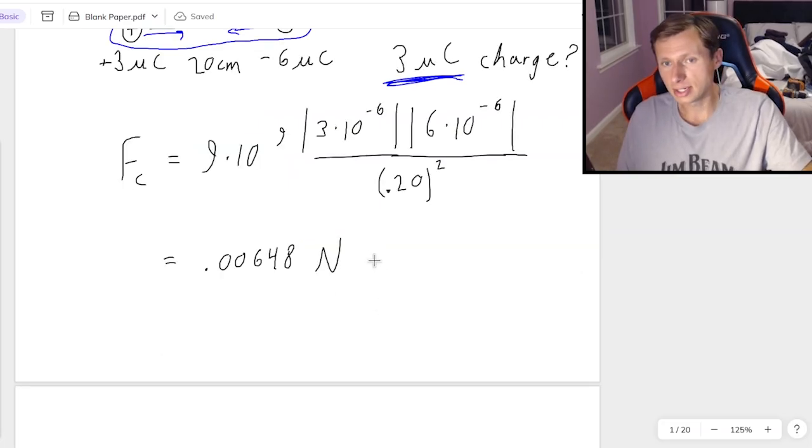The way I can represent that, I can do it one of two ways. One, I can say positive i hat, which just means to the right in vector notation. Or you can choose positive x hat, which is the same idea, but a different way of writing it. So I'm going to choose i hat. If you're not familiar with i hat, all that means is in the positive x direction.